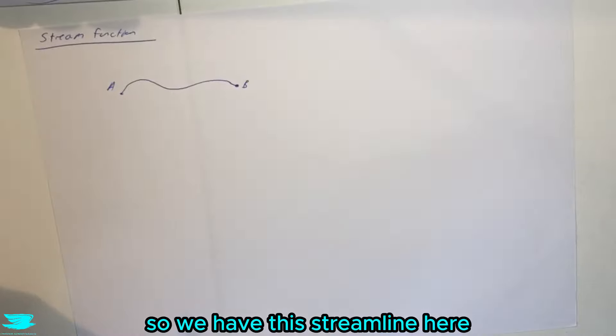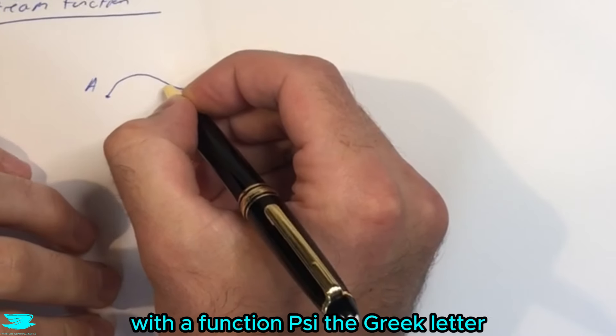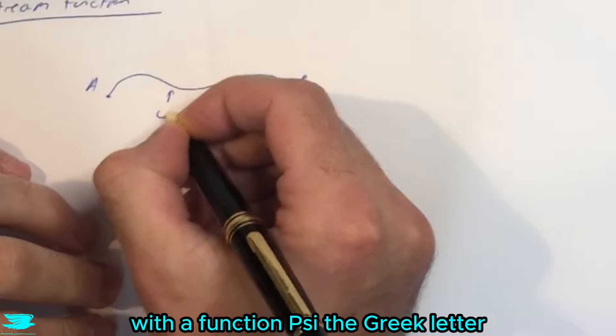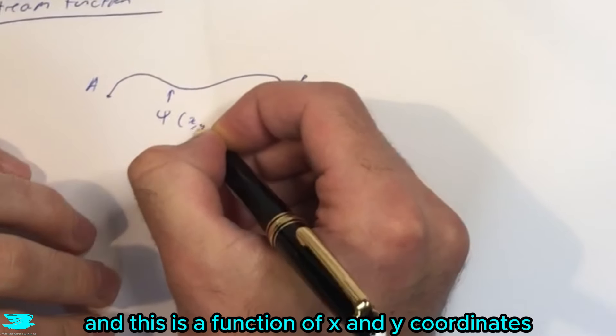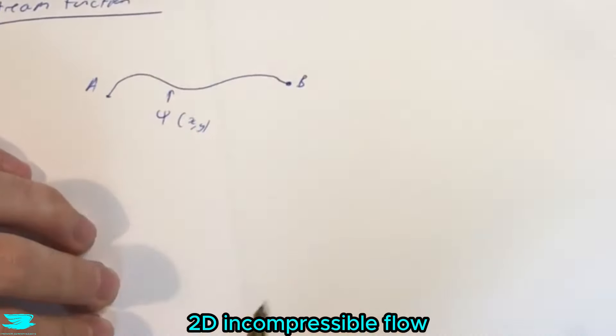So we have this streamline here and we can actually describe this mathematically with a function psi, the Greek letter. This is a function of x and y coordinates, and as I mentioned this is for 2D incompressible flow.